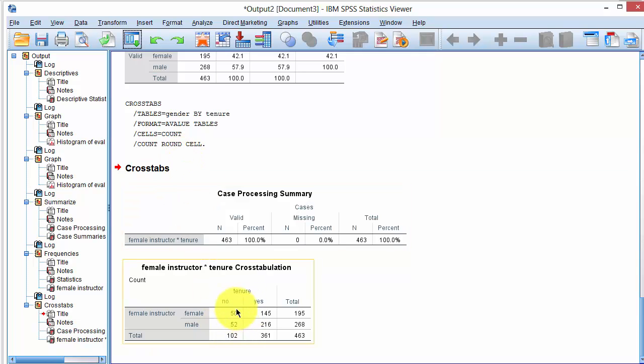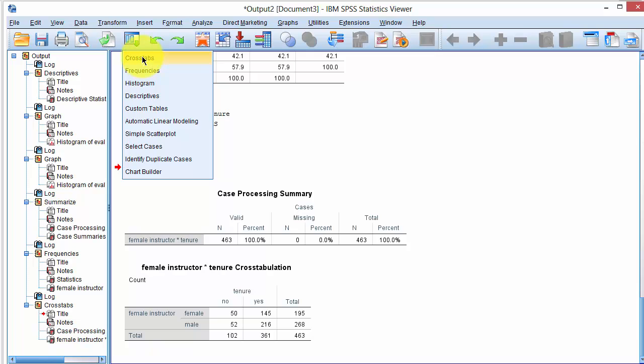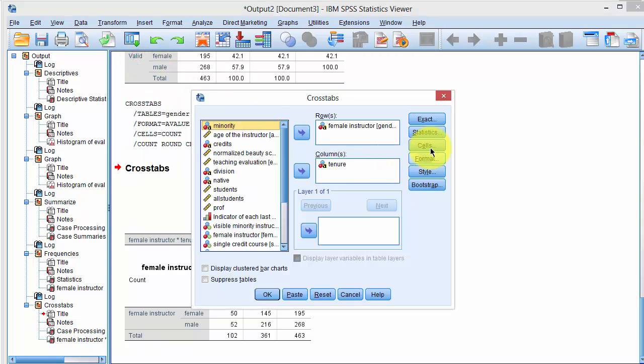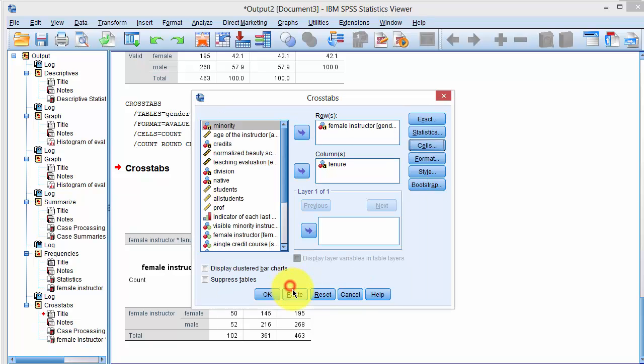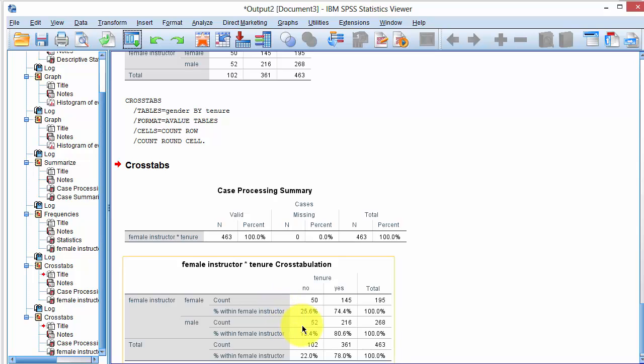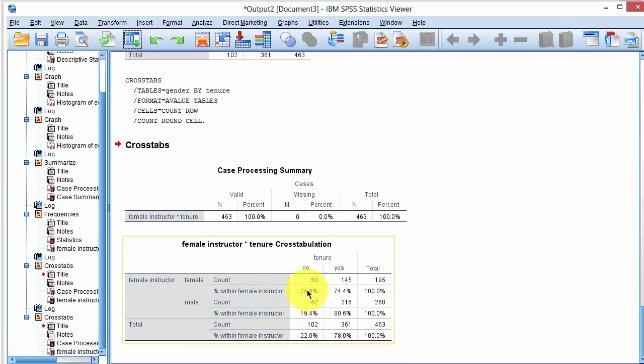If you would like to reproduce the details about percentages, click on the same dialog box. Recall the cross-tabs dialog box. Click on Cells and say that you want the percentages by rows, and click Continue, and say OK. And now you have the details by rows, so 25% or 6%, 74%, so it sums up to 100%.